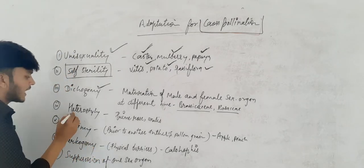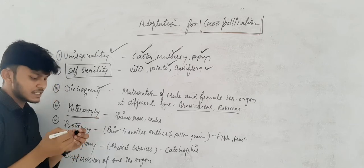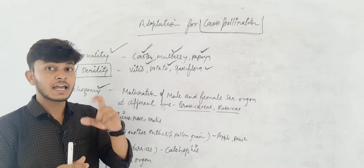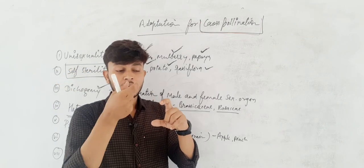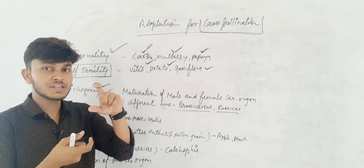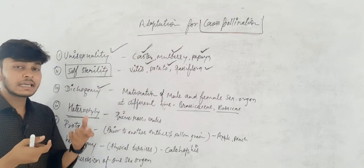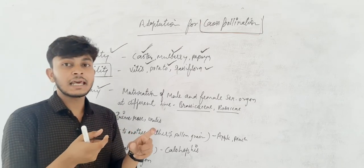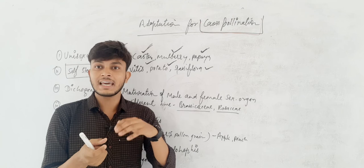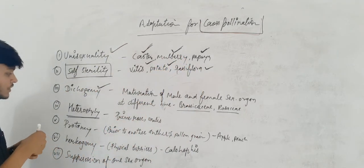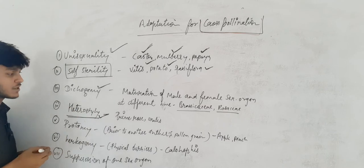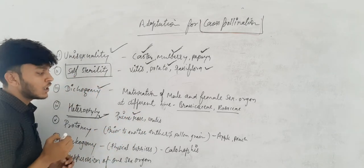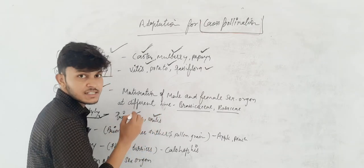The next one is heterostyly. Heterostyly means that in the flower, both male and female sex organs are present, but the style length is either more or shorter than the filament. The style length plays a very important and vital role. If the style length is not equal to the filament — whether short or long — that situation is known as heterostyly. It is found in primrose and oxalis.